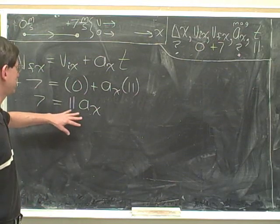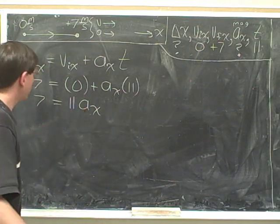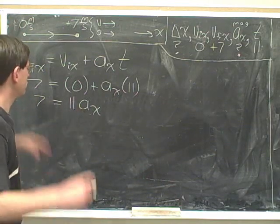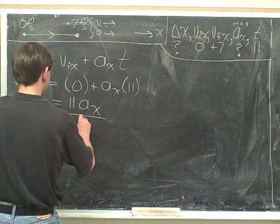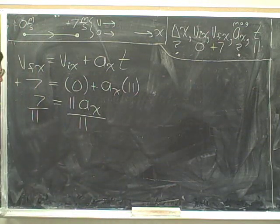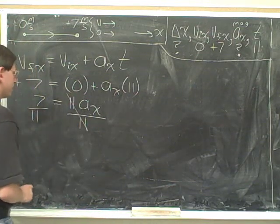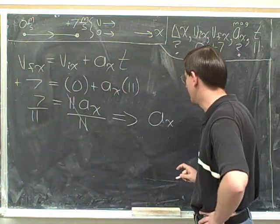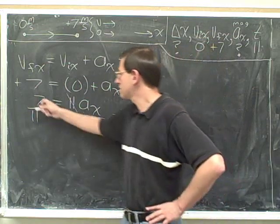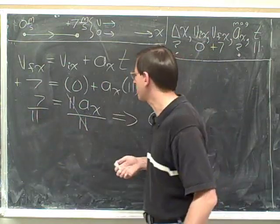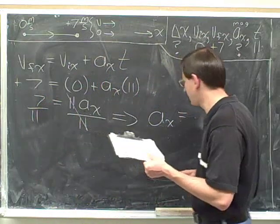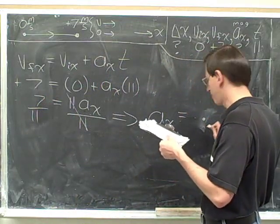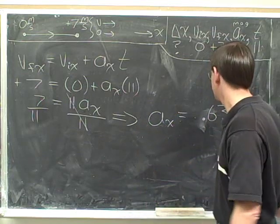How can we detach the 11 from this acceleration? Well, the 11 is affixing itself by the means of multiplication. So to do the opposite, we would need to divide. That gets rid of the 11. And then we end up with the acceleration is 7 elevenths. The acceleration is 7 divided by 11. Using our calculator, 7 divided by 11 is approximately 0.636.